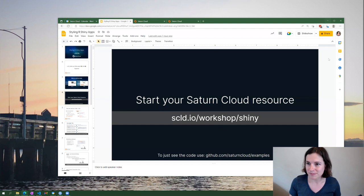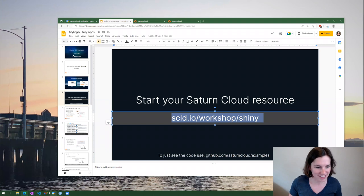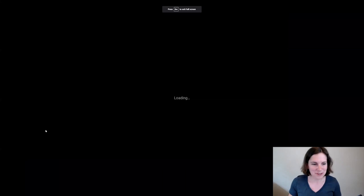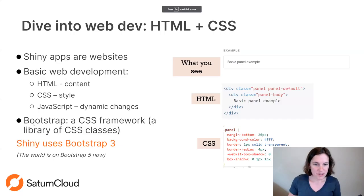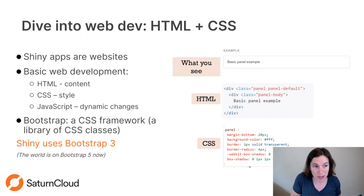So here's what we're going to do today. We're going to use HTML, CSS, and a thing called Bootstrap to make our Shiny app look good. Here's a fun fact that took me a while to learn: Shiny apps are just websites. You think it's doing all this magic, and it is doing a lot of magic, but in the end it is still just a website. A website is basically made of three things: HTML files which have the content, CSS which is the styling, and JavaScript for dynamically changing stuff. We're not going to worry about JavaScript today.